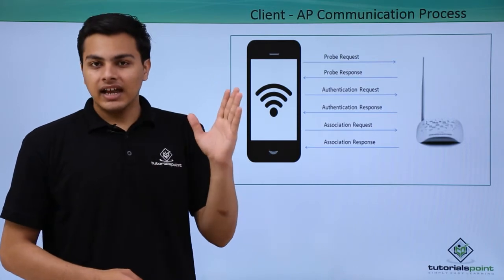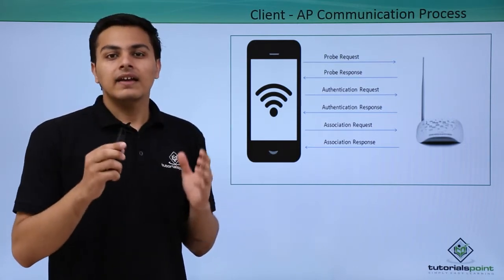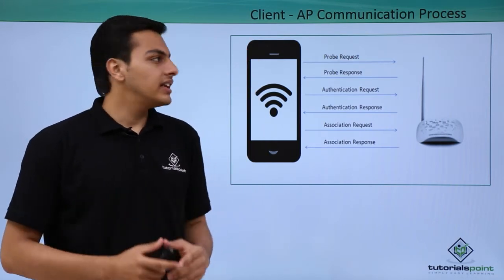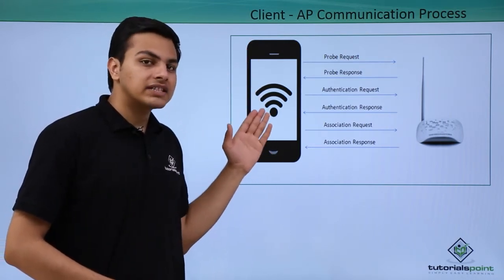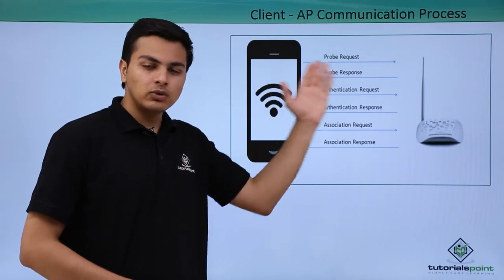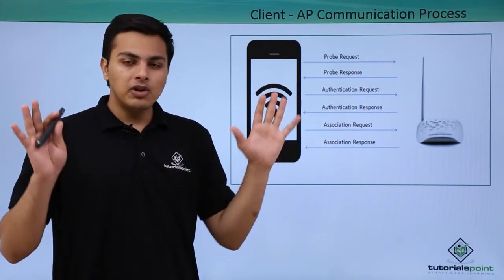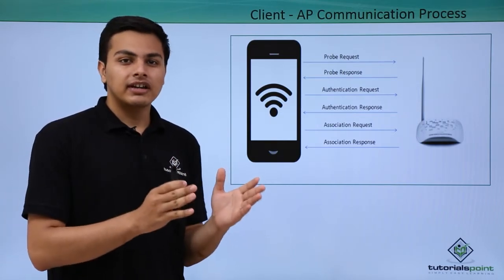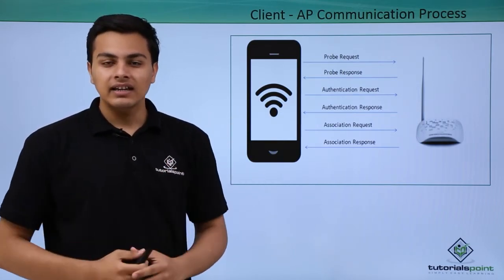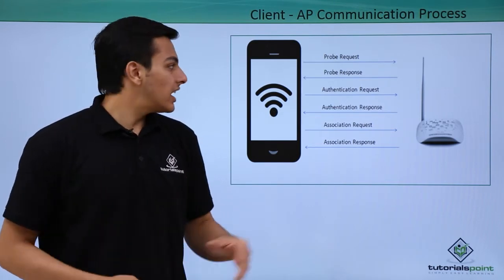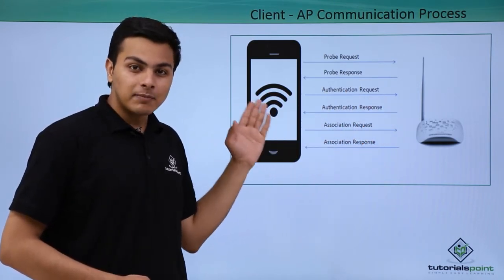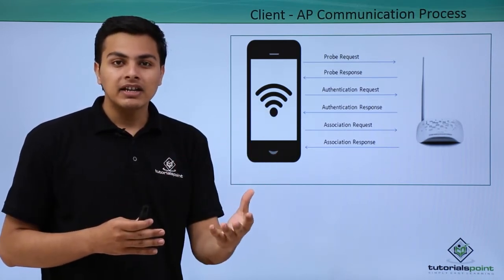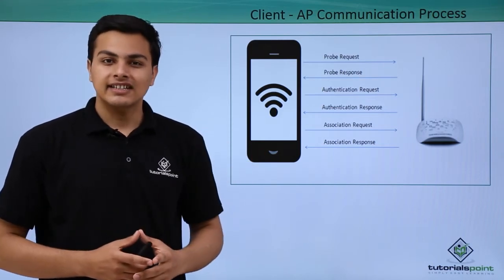The first thing is, whenever our client turns on his WiFi, the client starts sending a probe request into the air. The probe request means: 'Hey, I am new here — is there any access point who wants to connect with me?' If there is an access point that wants to connect with that client, it will send a probe response containing the particular requirements needed to connect with that access point.